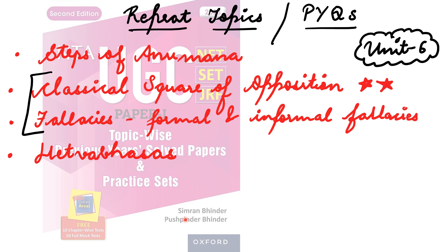For logical reasoning, these previous year questions are repeatedly asked. Topics include: steps of Anumana (the sequence of steps must be in proper order), classical square of opposition — the most important topic, with two to three questions per shift — and fallacies. Both formal and informal fallacies are examined. Prepare hasty generalization, slippery slope, and appeal to ignorance, as these are example-based questions. Inference from fallacies is also a very important topic.